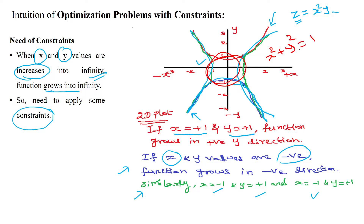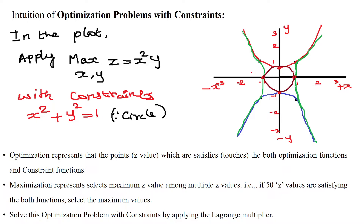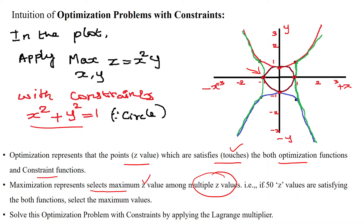Finally, the optimized value is found at the location where the function forms a circle, given by the condition x squared plus y squared equal to one. Applying the constraint gives you the circle-based points. The optimization selects the point where the z value satisfies and touches both the optimization function and the constraint function. The maximization selects the maximum z value among multiple z values — for example, if 50 z values satisfy both functions, select the maximum.